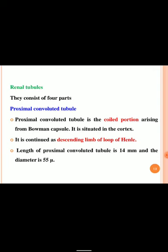The renal tubule mainly consists of four parts: proximal convoluted tubule, loop of Henle, distal convoluted tubule and collecting duct. The proximal convoluted tubule is a coiled portion arising from Bowman's capsule, situated in the cortex region, and continued as the descending limb of the loop of Henle. The length of the proximal convoluted tubule is 14 mm and the diameter is 55 microns.